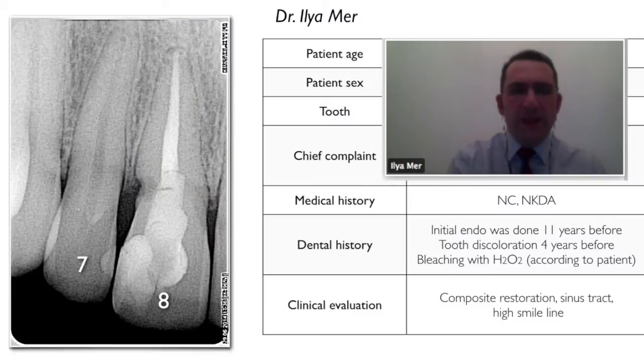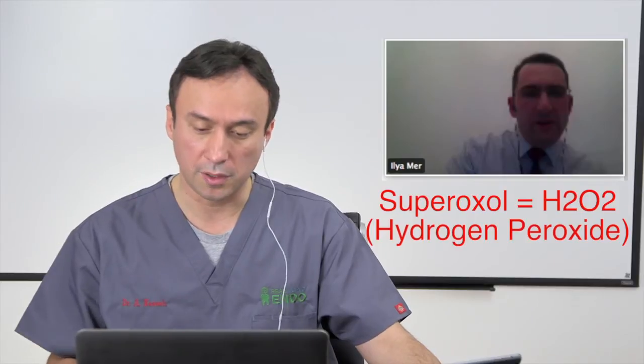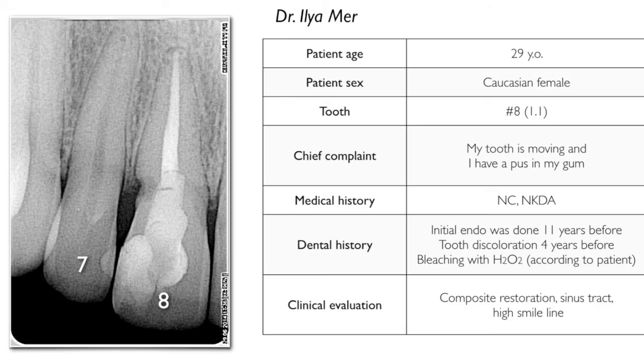So they tried to bleach the tooth using Superoxol — hydrogen peroxide — and probably that defect can initiate cervical resorption. Right on the distal area, I can see the notch. And you are absolutely right — 7% of internal bleaching cases where Superoxol has been used has been associated with invasive cervical root resorption.